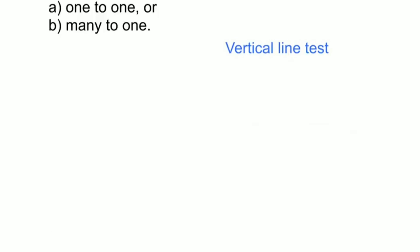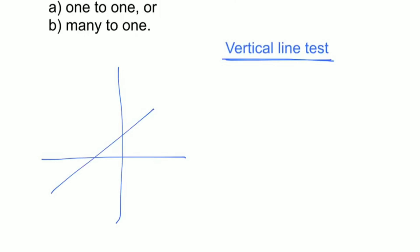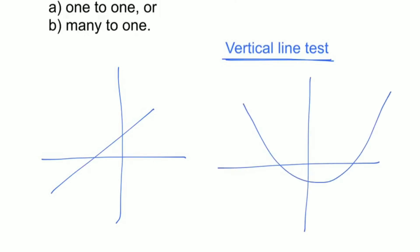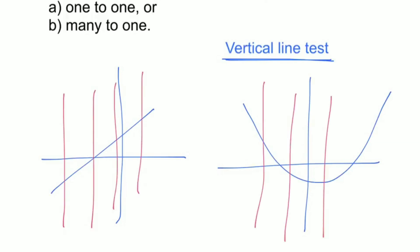A function is a special class of relation which is either one-to-one or many-to-one. There are four classes — one-to-one, one-to-many, many-to-one, and many-to-many — but functions are only those relations which are one-to-one or many-to-one. Functions pass the vertical line test: no matter where you draw a vertical line, it will only pass through the function once and once only.